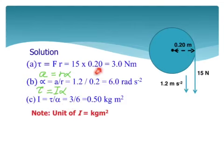For part (a), you use the formula τ = Fr = 15 × 0.20 = 3.0 Nm.